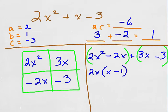In the second group the GCF is 3. So we'll factor that out and after we do we'll be left with the binomial x minus 1.